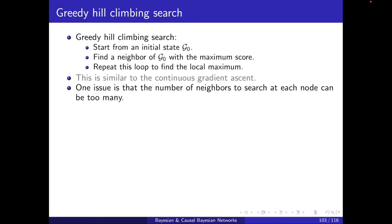Back to the greedy hill climbing search. One issue that we saw was that the number of neighbors to search at each node can be too many. Even with three nodes, we have difficulties to visualize all of them. And one solution is to evaluate only a sample of the neighbors at each step, not all of them. And this results in the first ascent hill climbing algorithm.